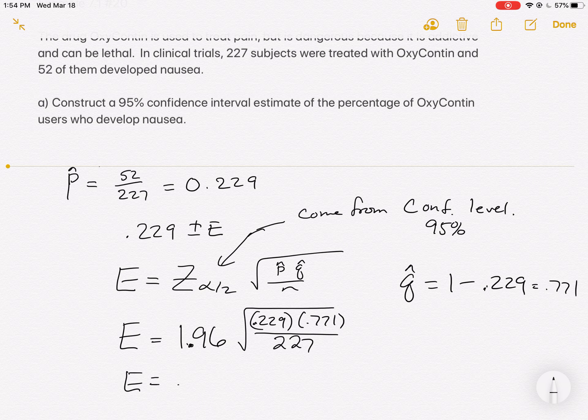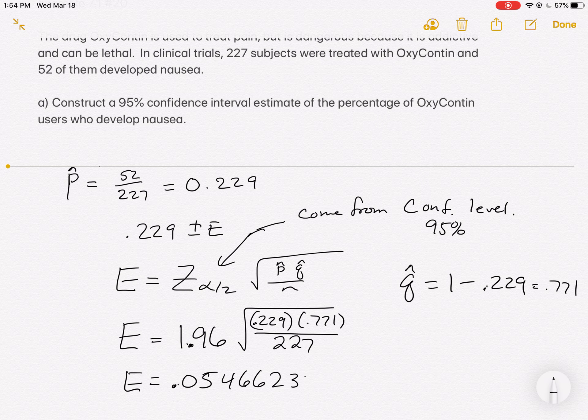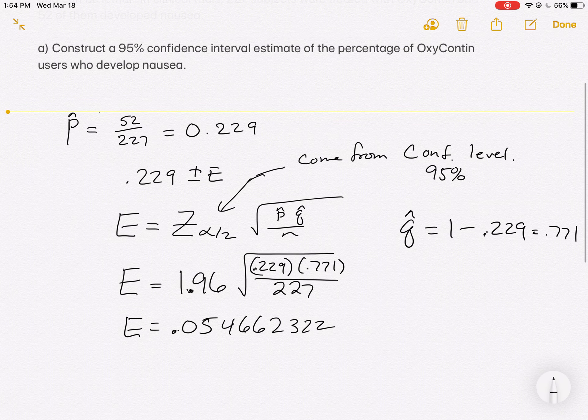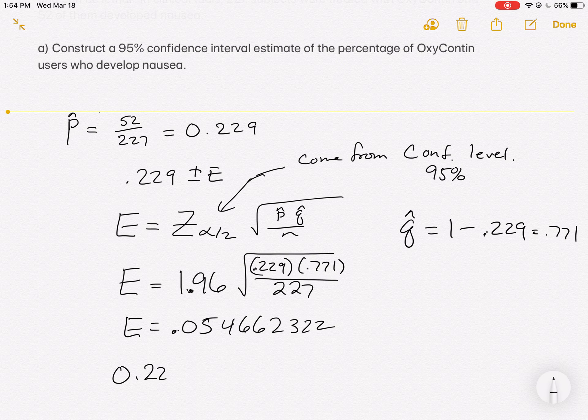And when I hit equals, my error that's produced is 0.054662322 is what I'm looking at. Now we're going to round that. But usually I round it to the exact same place that my p hat's rounded. So I get 0.229.